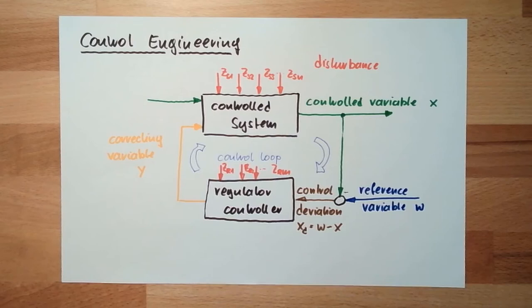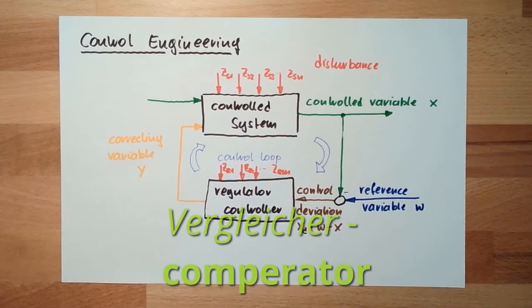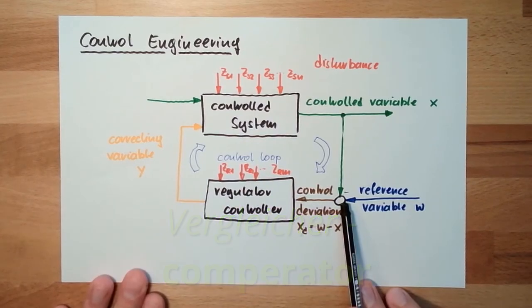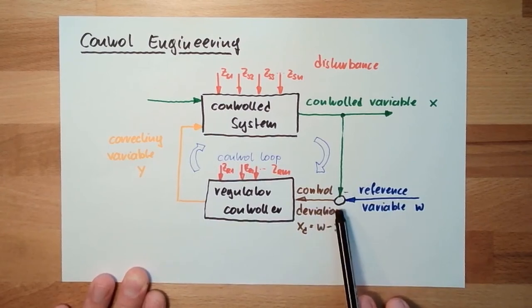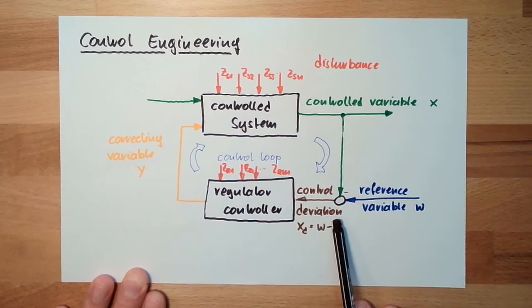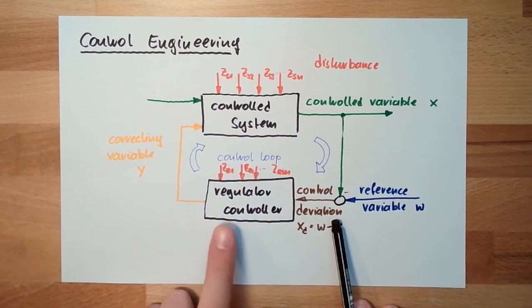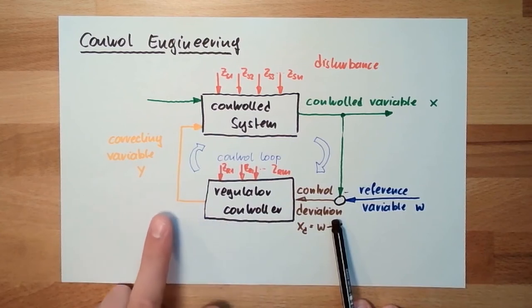In every closed loop control system, we need a comparator. This thing here is the comparator — it compares the control variable to a reference variable. And the output of the comparator is the control deviation.